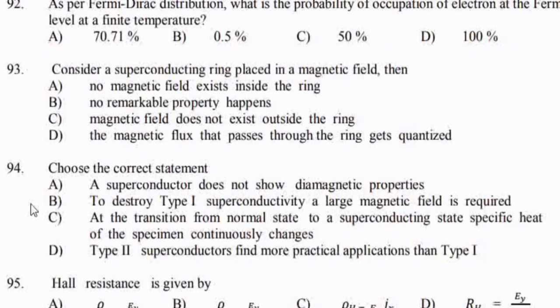Consider a superconducting ring placed in a magnetic field. Then — option D — the magnetic flux that passes through the ring gets quantized.